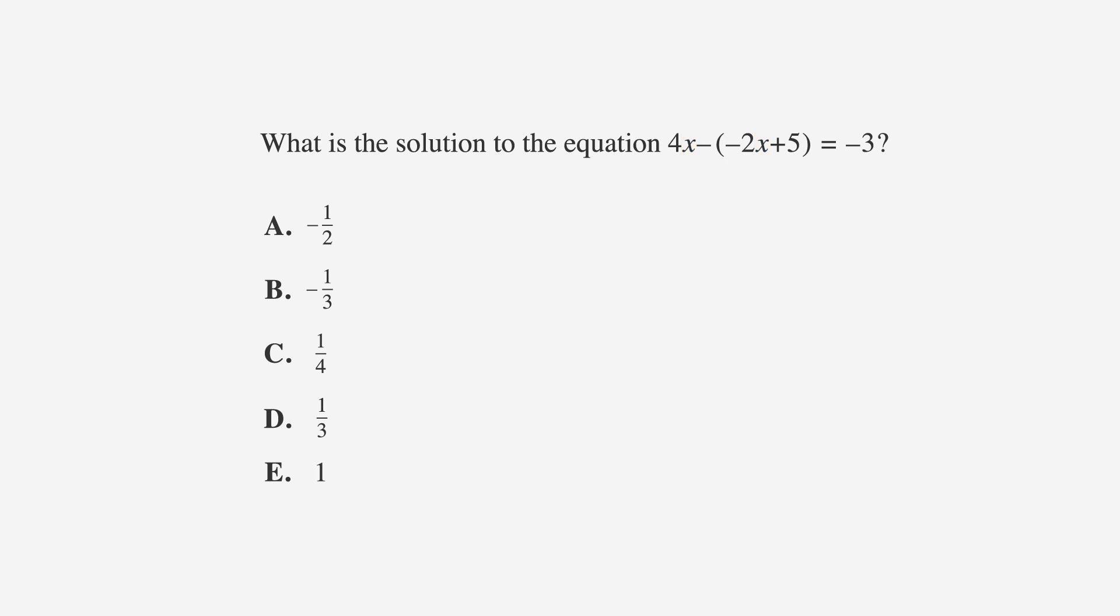Our second rule is that you need to be absolutely sure about what your answer choices represent. In this case, they're all possible values for x, so label them.